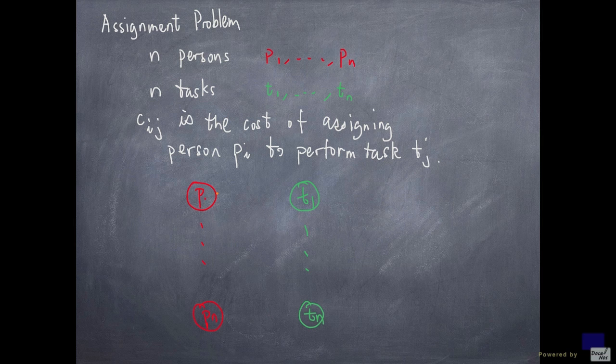And since every person can be assigned to every task, I'm going to put an arrow between all p's and all t's. So every arc leaves a person and enters a task, and so on.